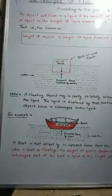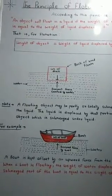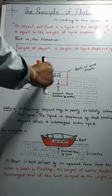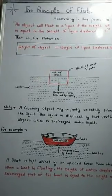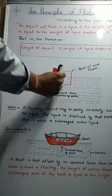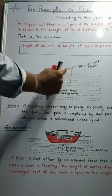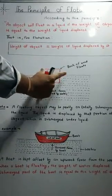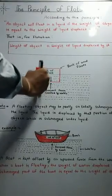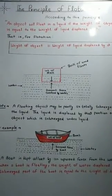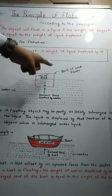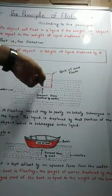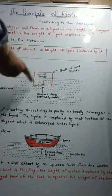For example, remember that this block has a weight of 50 newtons. So if this object is floating in a liquid, and this block weighs 50 newtons and it floats, then remember that when it floats, the weight of the liquid displaced will also be 50 newtons — equal to the weight of the object.